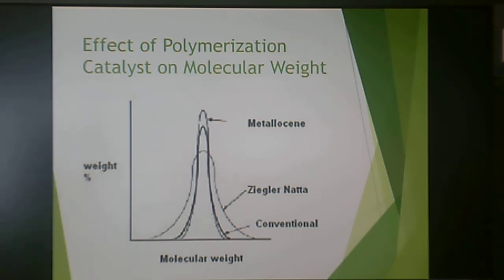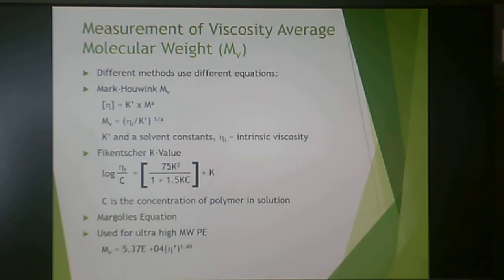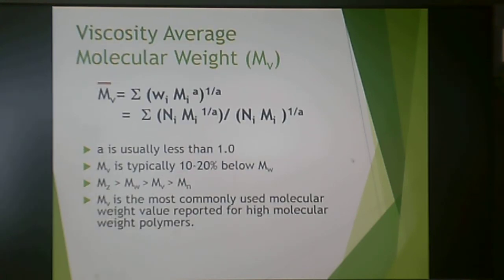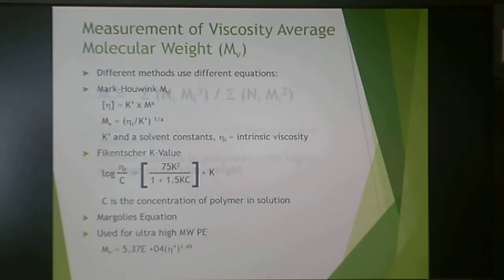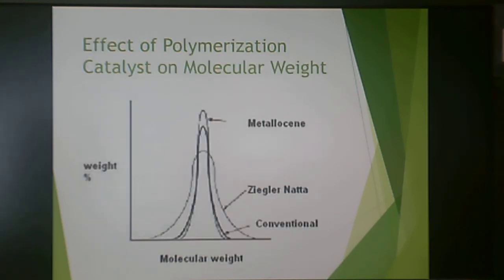The key takeaways are: how to calculate polydispersity index as M sub W divided by M sub N; the fact that M sub W is almost always larger than M sub N; and the hierarchy M sub Z > M sub W > M sub V > M sub N. These are the things to focus on for the quiz for this lecture. Please take your quiz for molecular weight, and then we will move on to crystallinity.